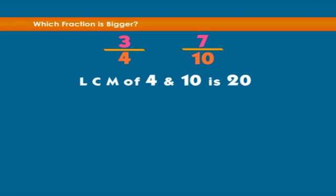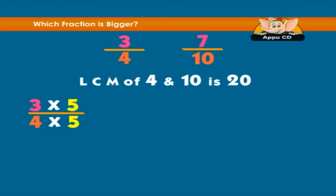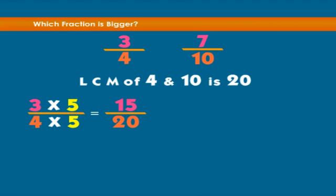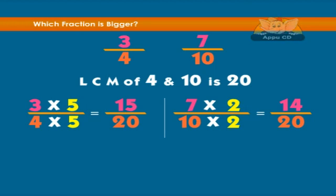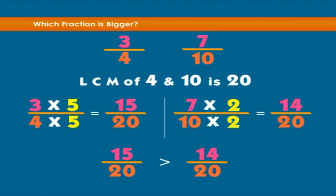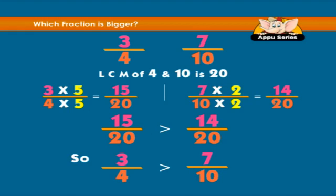To make the denominator twenty, we have to multiply four by five, and hence the numerator also by five — the number becomes fifteen twentieths. To make the denominator of the other number twenty, we have to multiply it by two, so the numerator also has to be multiplied by two — this number becomes fourteen twentieths. Now we can easily tell that fifteen twentieths is greater than fourteen twentieths, so three fourths is greater than seven tenths.